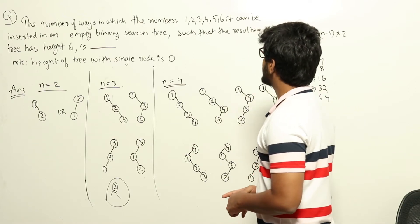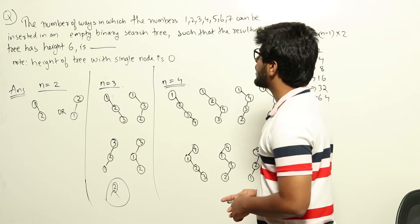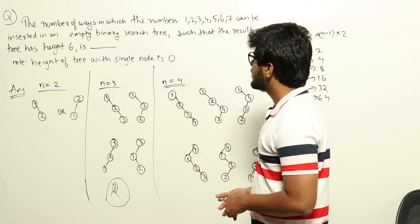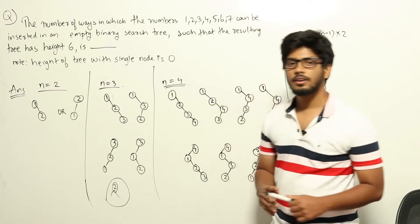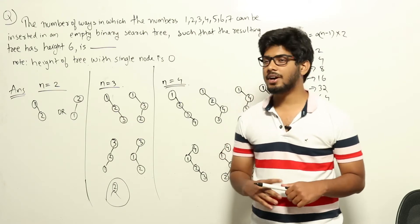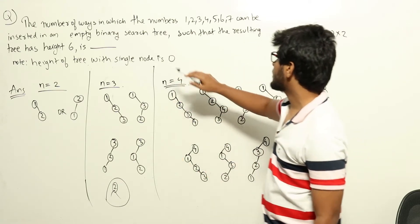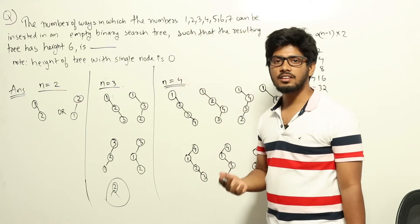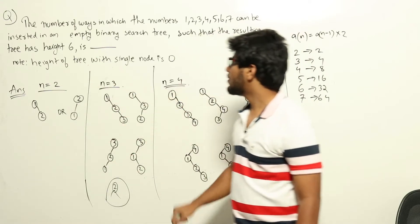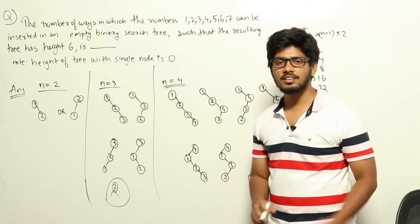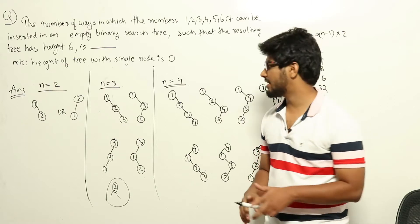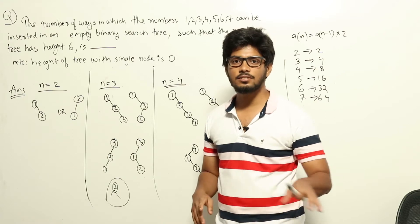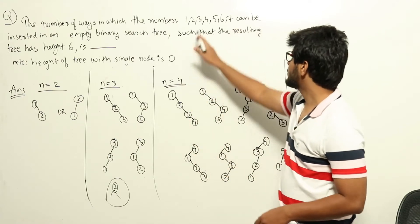The question asks: in how many ways can the numbers 1, 2, 3, 4, 5, 6, 7 be inserted into an empty binary search tree such that the resulting tree has height 6? Note: height of a tree with a single node is zero. If you're adding seven numbers and forming a tree of height six, it means the tree will be a chain — meaning no node will have two children simultaneously; each node will have exactly one child.